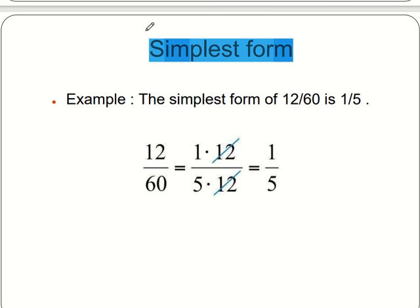Now see why is it so. As we can see here, 12 ones are 12 and 12 fives are 60. Therefore, 1 by 5 is the simplest form of 12 by 60.